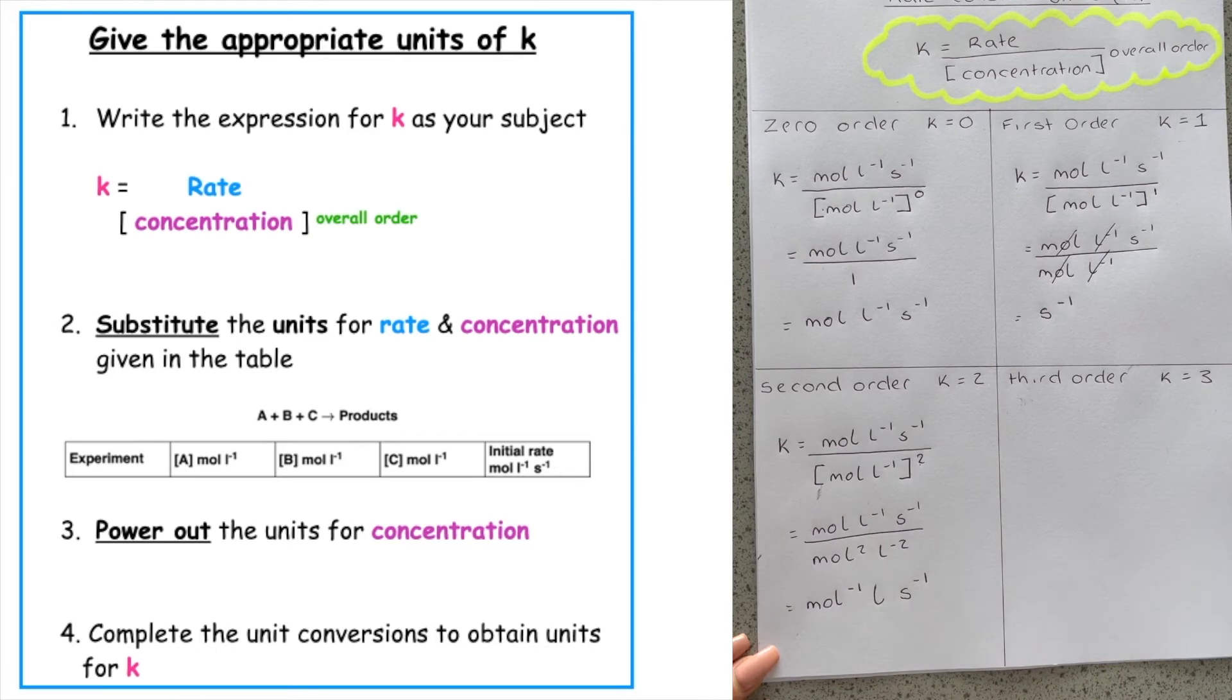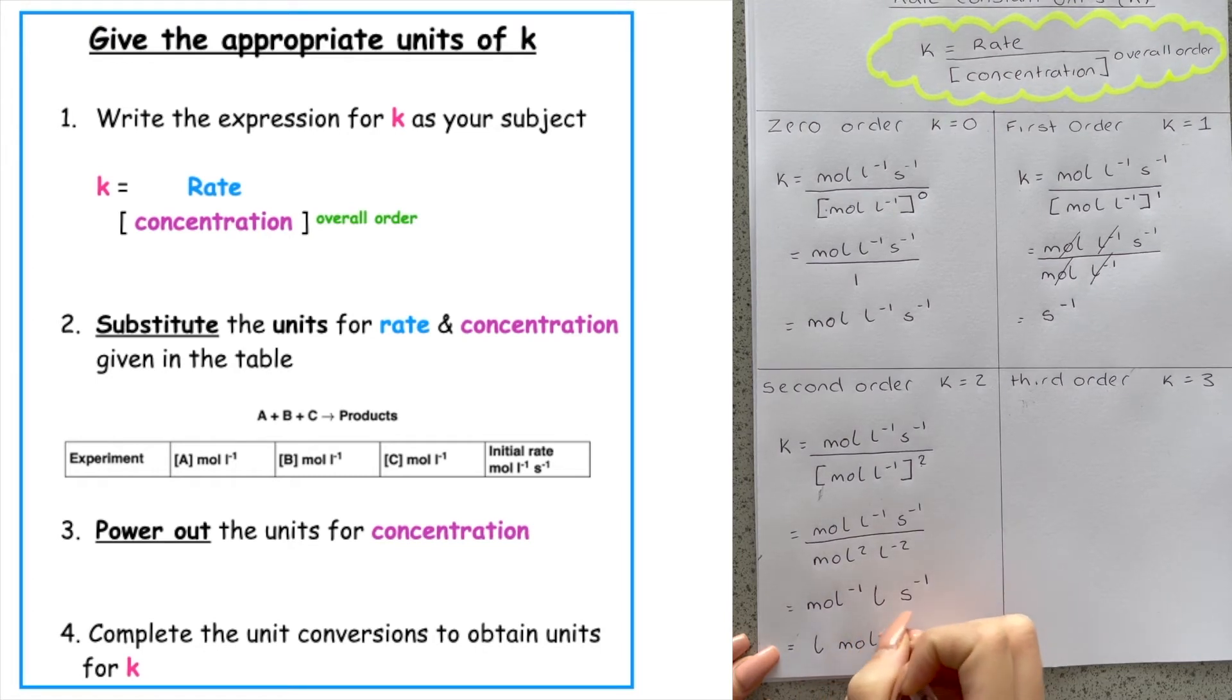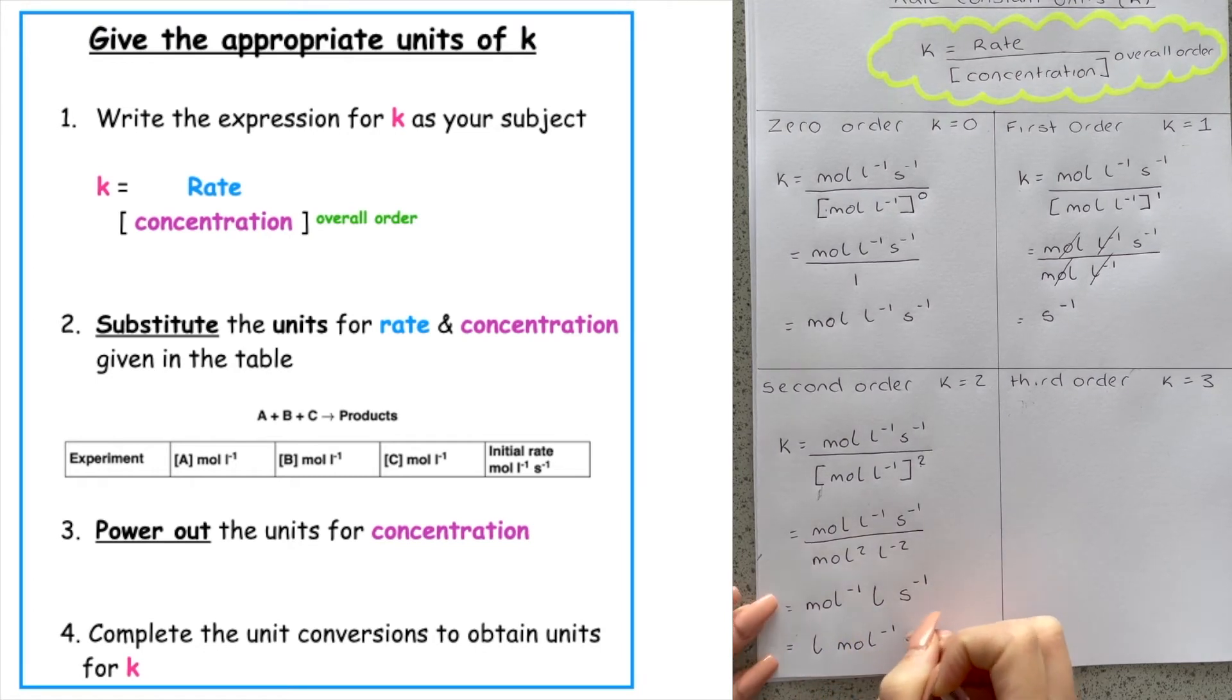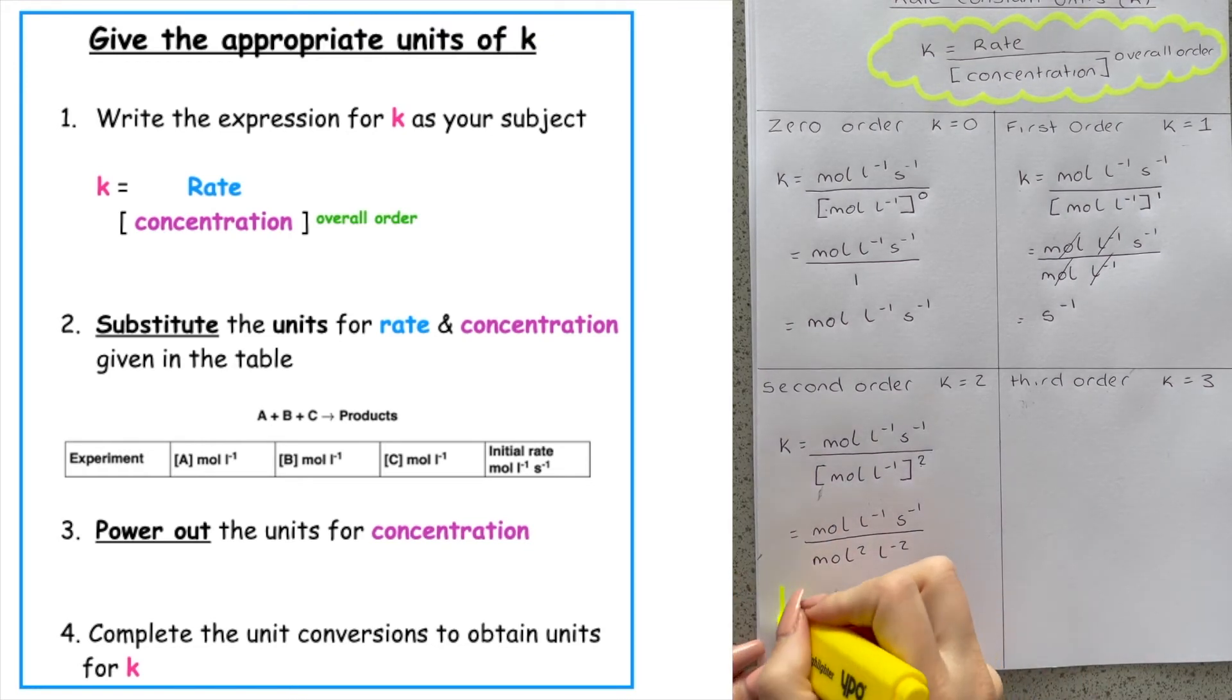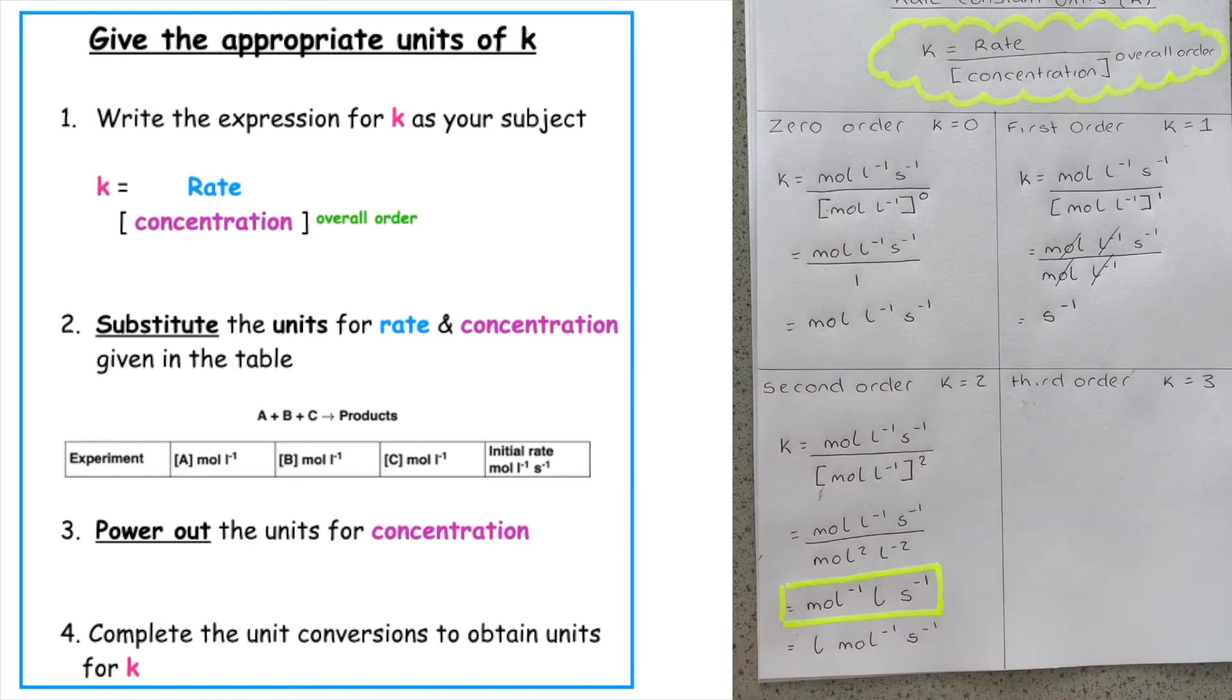Now, this will be accepted in past papers. However, you'll probably see them writing the expression as the positive entity first, which is our litre. And then when we have our negative, we usually do it in alphabetical order, which would be mole minus one S minus one. But this here, this would be accepted. So you can still do that unit there.